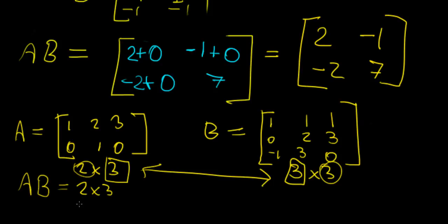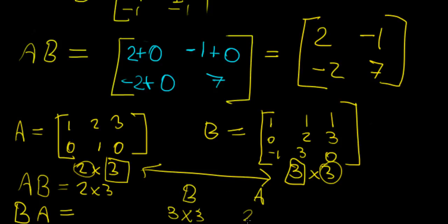How about B times A? Matrix B is three by three, and matrix A is two by three. The number of columns in B is three, but the number of rows in A is two — those are not equal, so B times A is undefined. This just comes to show that the order of multiplication of matrices actually matters.